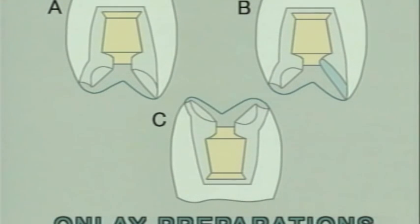It is important that enough reduction is done so that there will be thickness of gold to prevent it from wearing through in ensuing years. Notice that the mandibular tooth has a rolling outline which blends into the proximal walls.